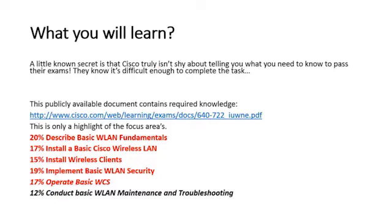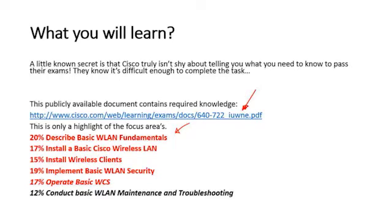A little known secret: Cisco is not shy about telling you what they want you to know to pass their exams. They know it's tough enough to learn those objectives. I always get the exam objectives from Cisco's site — I downloaded what you need to know to accomplish the 640-722 Introducing Unified Wireless Network exam. The knowledge for CCNA Wireless is spread across a lot of things: fundamentals, basic wireless LAN security, installing a basic Cisco wireless LAN, clients, and WCS are all important topics.